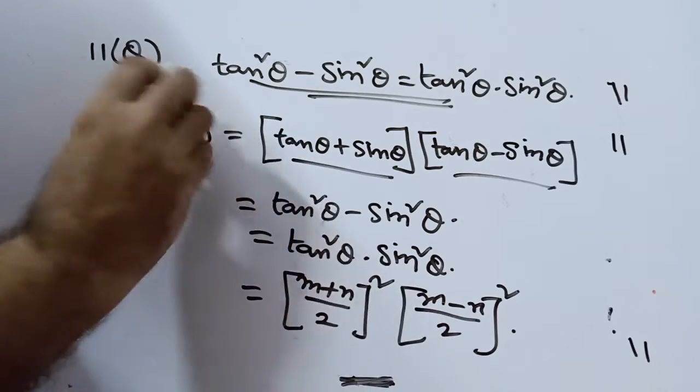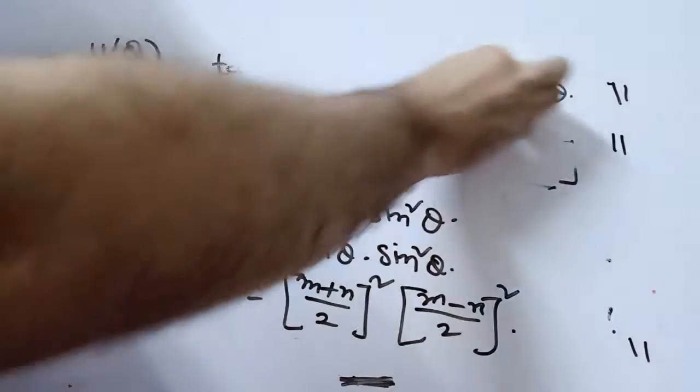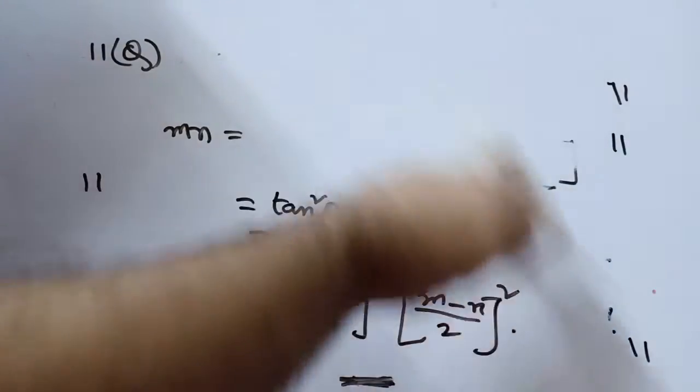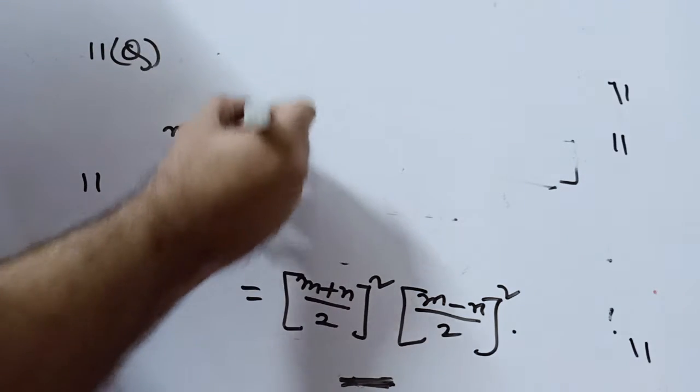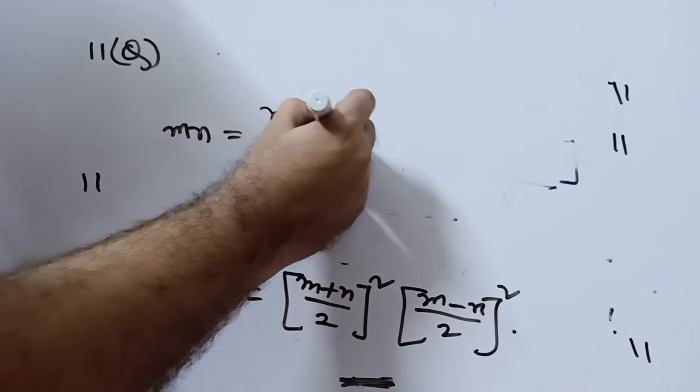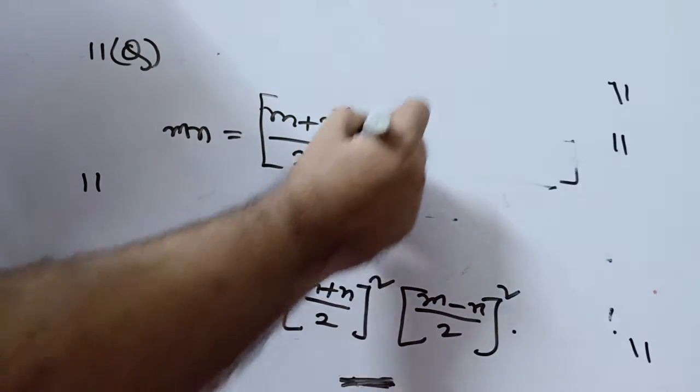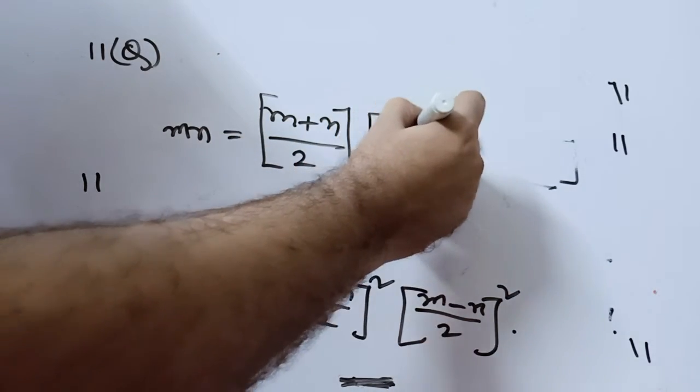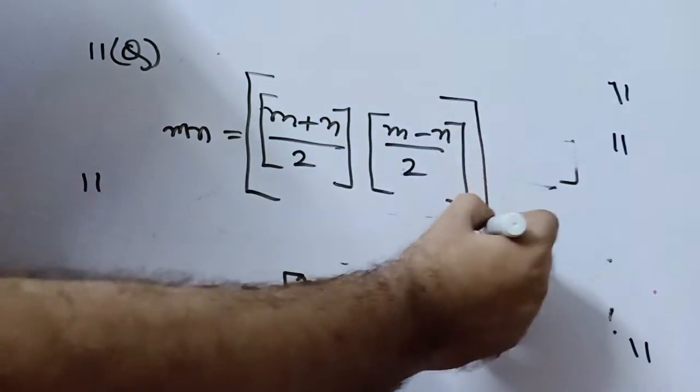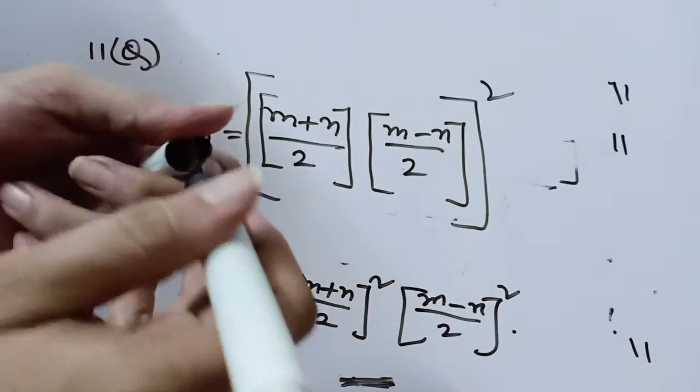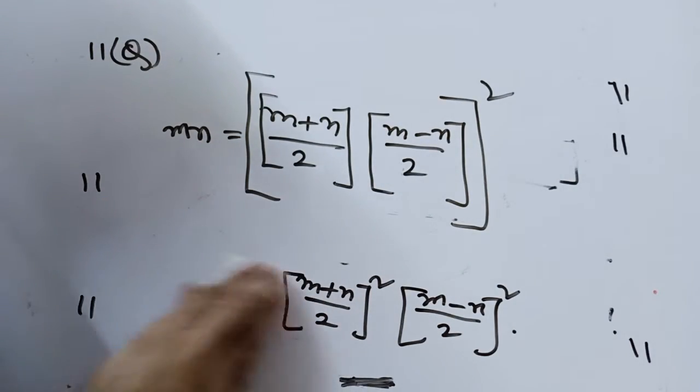From here, I can write this as m plus n by 2 into m minus n by 2. The square I am taking for the whole two pieces, the square on the whole.